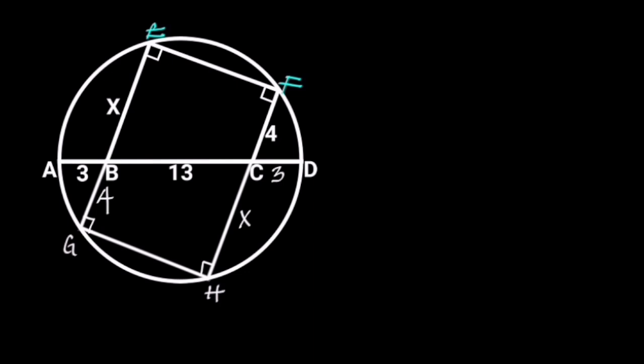So, from intersecting chord theorem, GB times BE is equal to AB times BD.